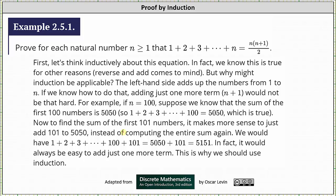We would have 1 + 2 + 3 + ... + 100 + 101, which would be 5050 + 101, which equals 5151. In fact, it would always be easier to add just one more term. This is why we use proof by induction.